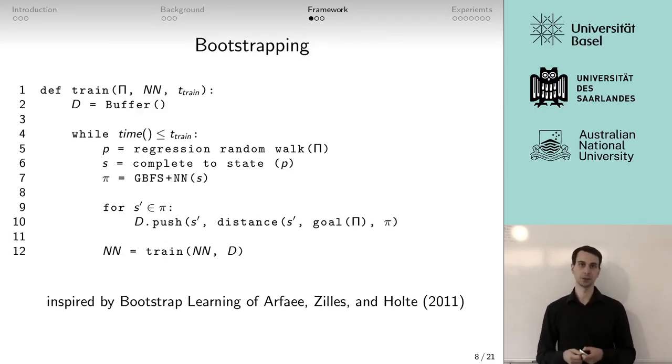Our first approach is inspired by bootstrapping from Arfaee et al. We get as input a planning instance, a normally untrained neural network, and a time limit. And as long as we have time, we start on the goal of the planning instance, we do a random walk using regression, and end in a partial state. Then we complete that partial state to a complete state, and afterwards we run a greedy best first search using our current neural network as heuristic. This gives us a plan, and then every state along the plan is added to the training data, labeled with the distance it has to the goal.